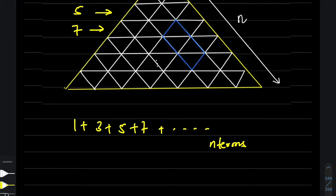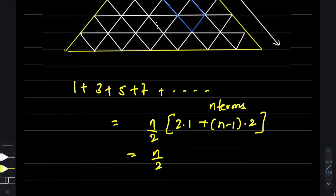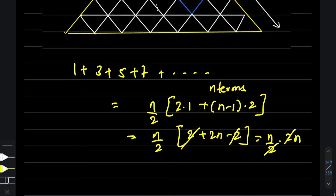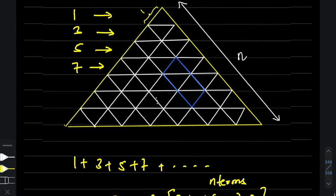The sum formula gives n/2 × (2a + (n−1)d), which simplifies to n/2 × (2 + 2n − 2), and after cancellation you get n². That's why the question setter says there are n² equilateral triangles filled within this bigger equilateral triangle.